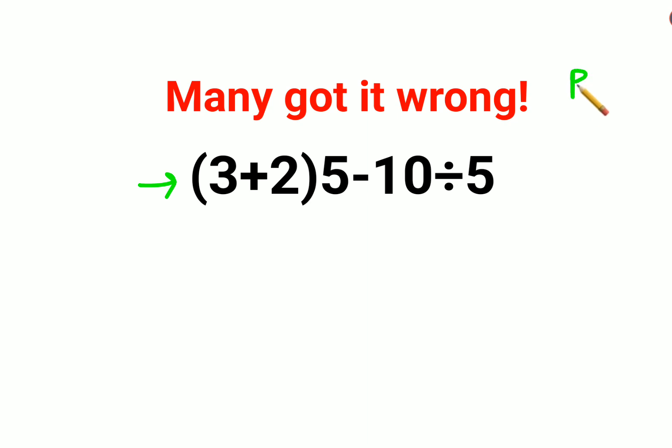We will solve this entire question on the basis of BODMAS. Okay, so we have 3 plus 2, which is 5. First we will do the bracket, so that is 5 times 5 minus 10 divided by 5.